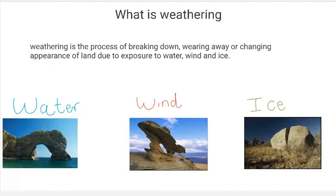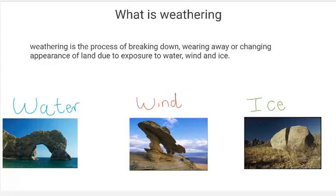Weathering is the process of breaking down, wearing away, or changing the appearance of land due to the exposure of water, wind, and ice. As we talked about in the past couple of videos, water can create things such as sea arches — that picture on the bottom left — through waves over time crashing into these rocks and slowly breaking them down.